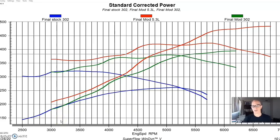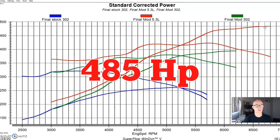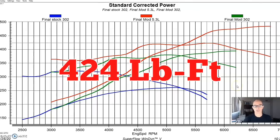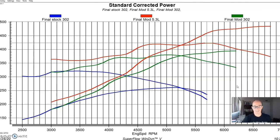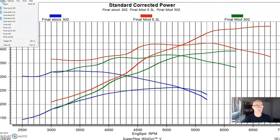I've removed the modified 351 because it was getting a little busy. We have our stock 302 in blue, our modified 302 in green, and then our modified 5.3 liter in red, which produced 485 horsepower and torque was up to 424 foot-pounds. As you can see, a modified 5.3 responds the way a 5-liter does, only more so. It starts off with more in stock trim and ends up with more in a modified version.